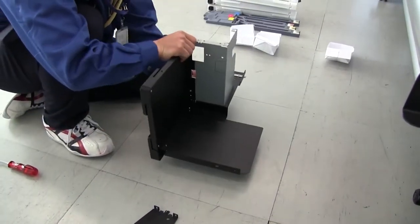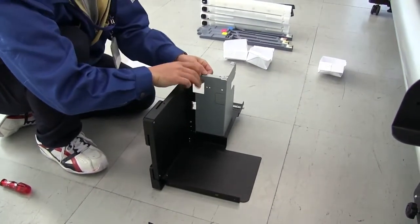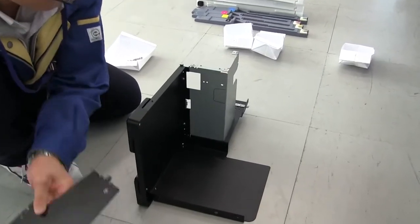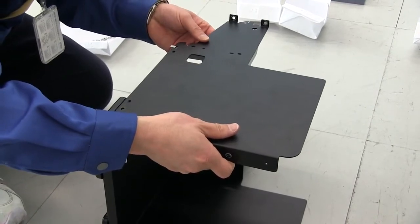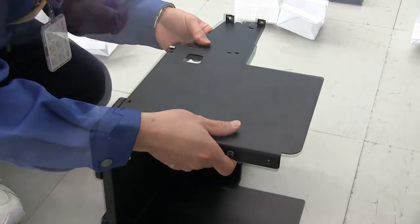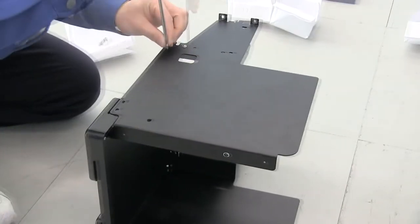Now turn the assembly over and align the left side ink tray part with the ink tray assembly. Secure using five U1 type screws.